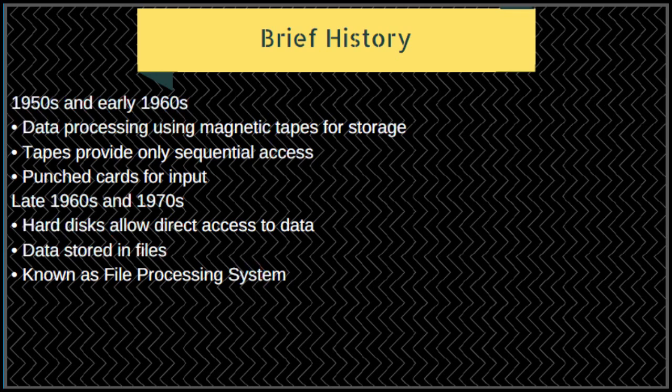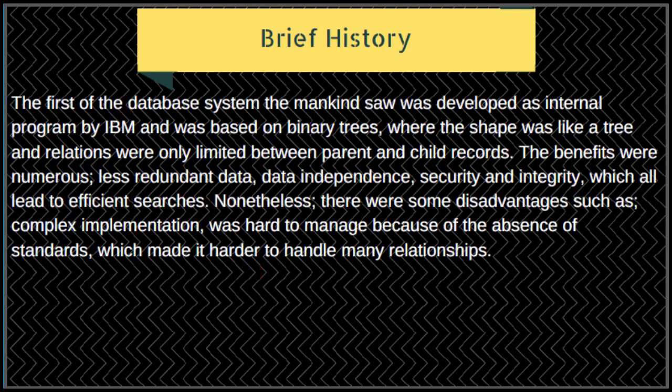From late 1960s to 1970s, hard disks were used to store data. The hard disk allowed direct access to data, and data could be stored in files — this was also known as the file processing system. The first database developed as an internal program was by IBM, based on binary trees.